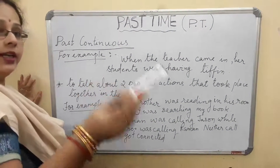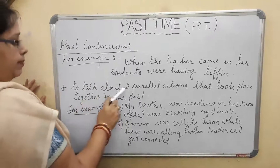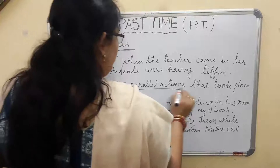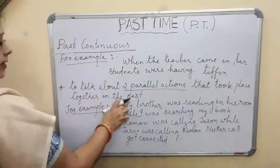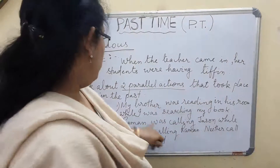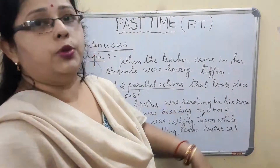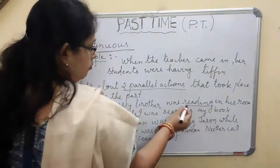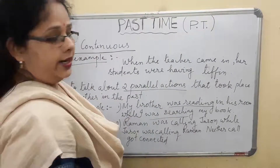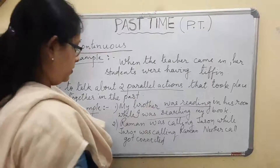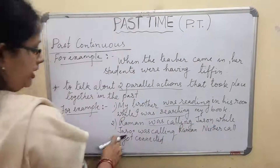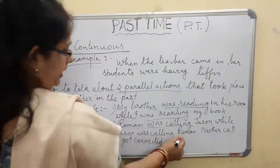The next use is to talk about two parallel actions — that means two actions that took place together at the same time in the past. For example: 'My brother was reading in his room while I was searching for my book.' Both actions — was reading and was searching — went on together at the same time.